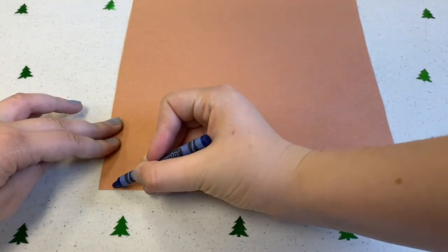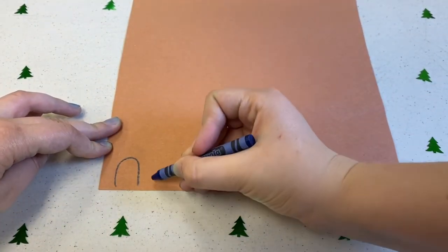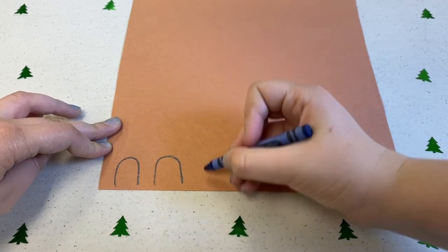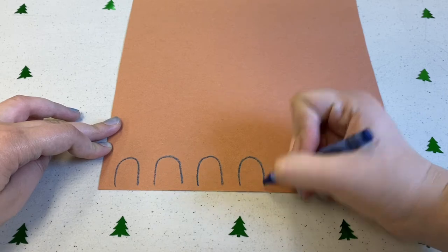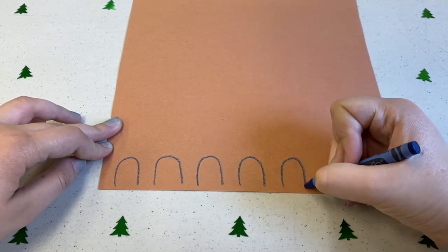We'll start by drawing and cutting out six half ovals of brown colored paper. These will be our four paws and our two ears.